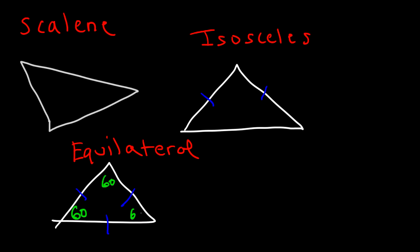So in an equilateral or equiangular triangle, all angles are 60 degrees and all sides are congruent to each other.